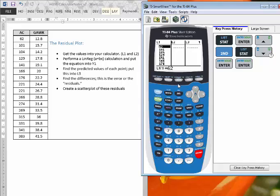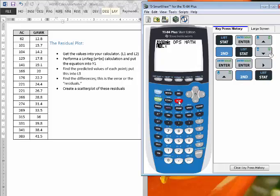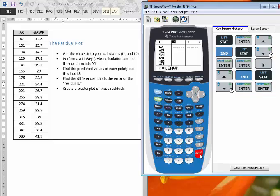So let's do the same for L2. So I'm up at L2, second function, stat, and I have to look a little further down because I have a lot of variables saved on my calculator. But if I just keep looking down, I eventually see the GAWK list, so I'll go ahead and enter that, and enter again.